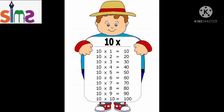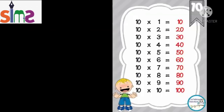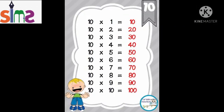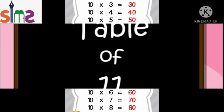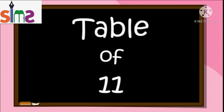Once again, let's learn table of 10. 10 ones are 10, 10 twos are 20, 10 threes are 30, 10 fours are 40, 10 fives are 50, 10 sixes are 60, 10 sevens are 70, 10 eights are 80, 10 nines are 90, 10 tens are 100.